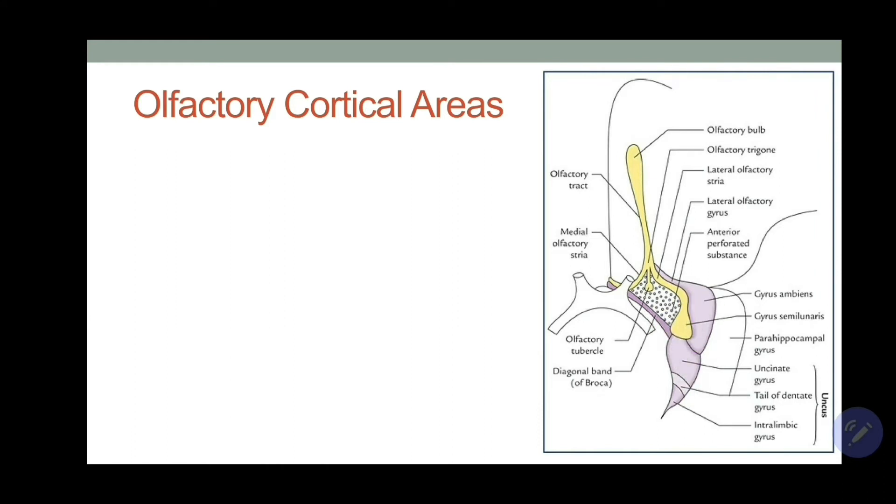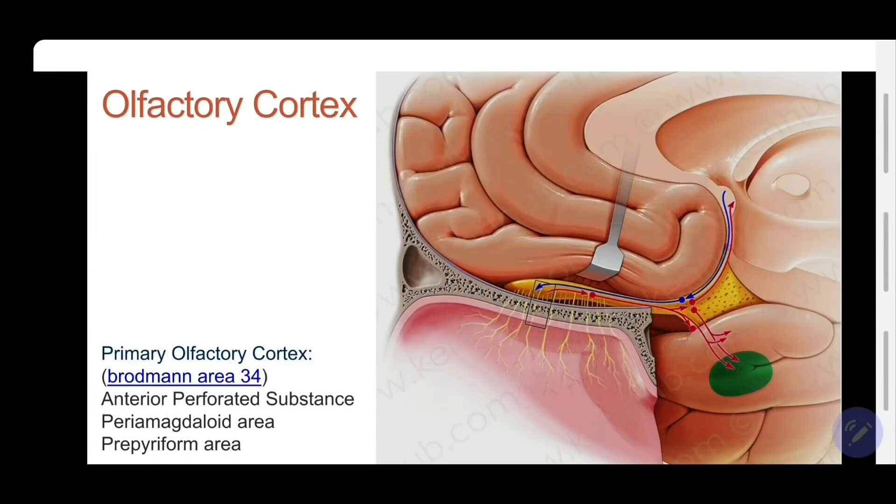You have the diagonal band of Broca. This surrounds the medial boundary of the anterior perforated substance. So I told you that this one is the parahippocampal gyrus, the anterior portion of parahippocampal gyrus. So we are talking about olfactory cortex, and that's made up of primary and secondary olfactory areas.